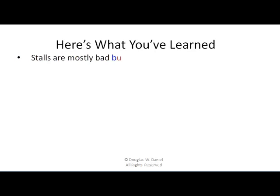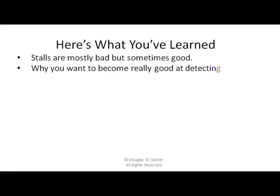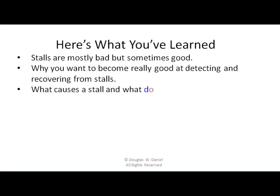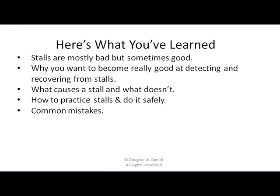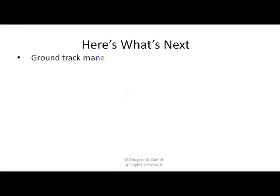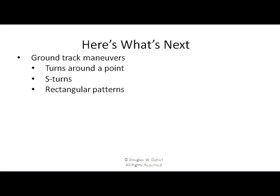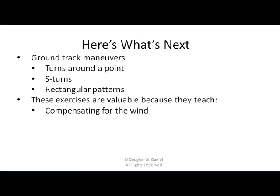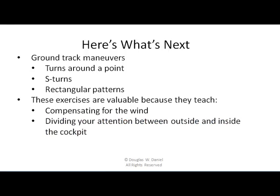So here's what you've learned: stalls are mostly bad but sometimes good; why you want to become really good at detecting and recovering from stalls; what causes a stall and what doesn't; how to practice stalls safely; and some common mistakes. Next we're going into ground track maneuvers — turns around a point, S-turns, and rectangular patterns. These exercises are valuable because they teach compensating for the wind, learning what the wind is really doing, and dividing your attention between outside and inside the cockpit — skills you need in the airport traffic area to help you land better.